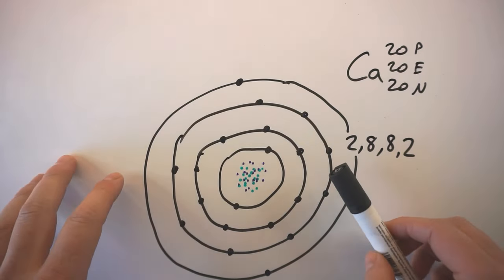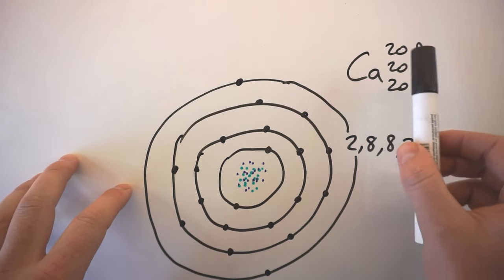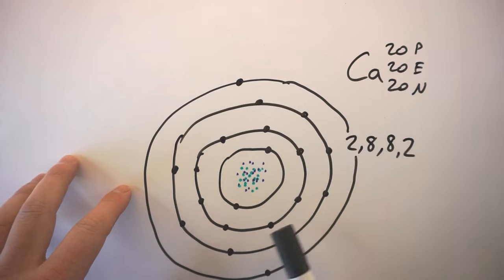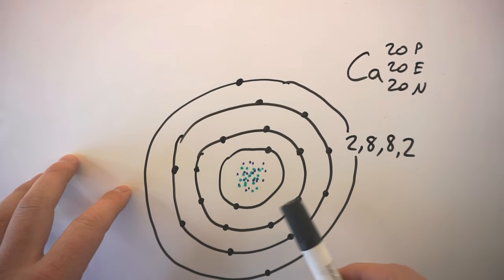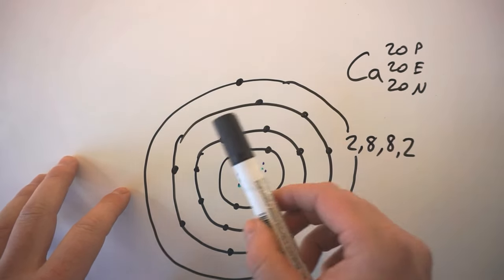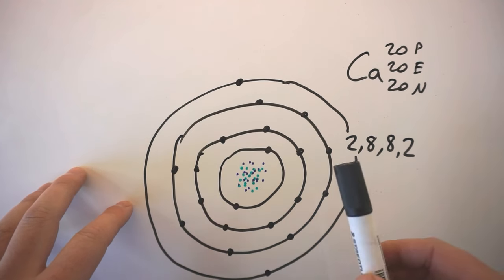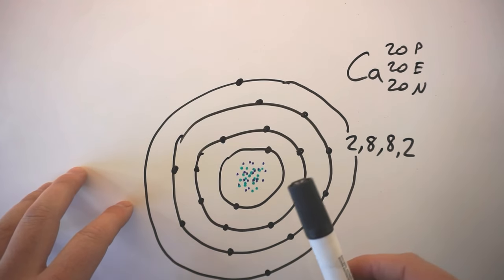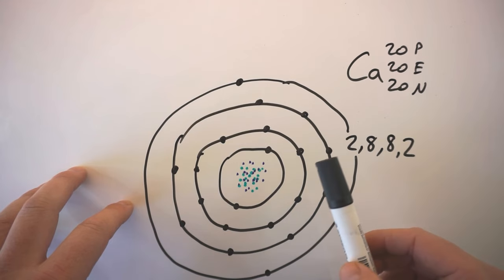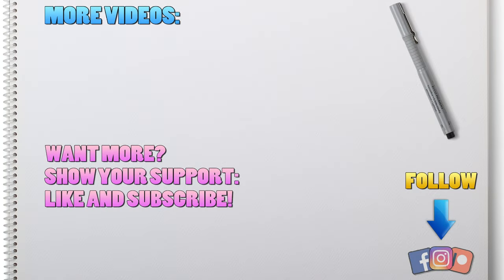I hope this lesson has helped you build confidence in collecting information about the elements and then using that information to draw representations of those elements. Later on in chemistry, you do learn that some shells can hold more electrons, but for now in high school we generally teach up to the first 20 elements — up to and including calcium. Thanks for watching and I'll see you next time.